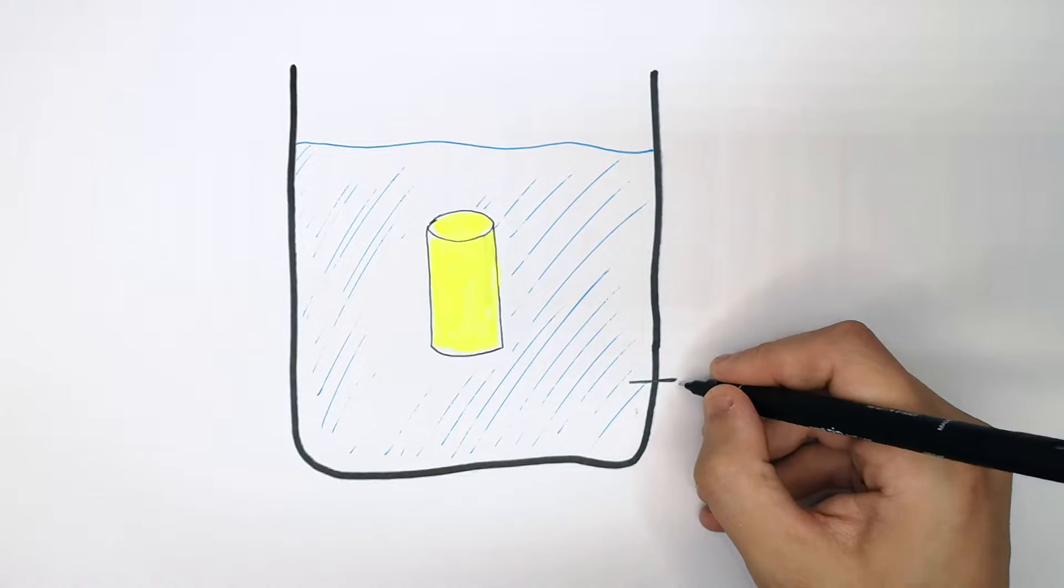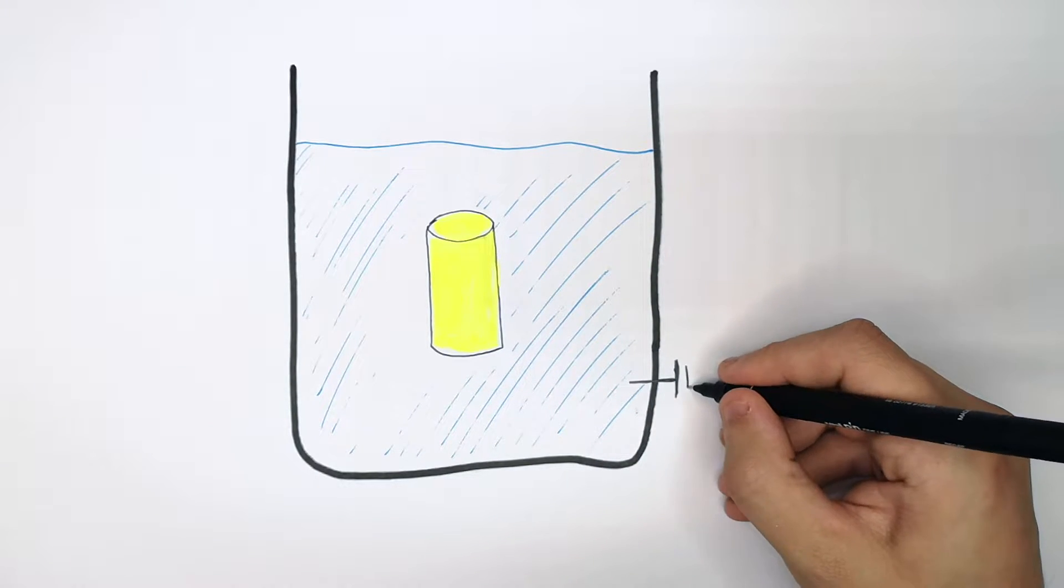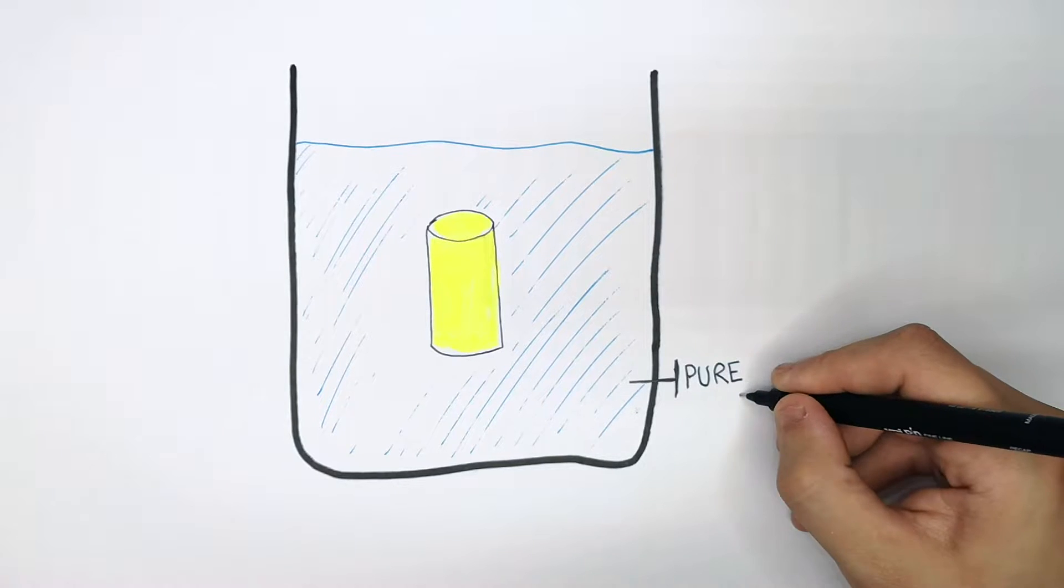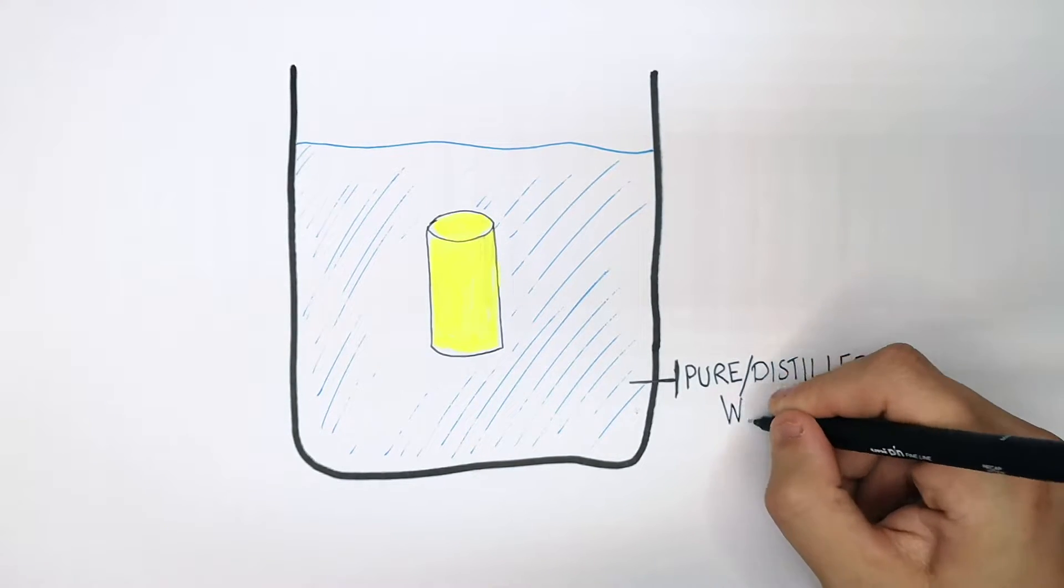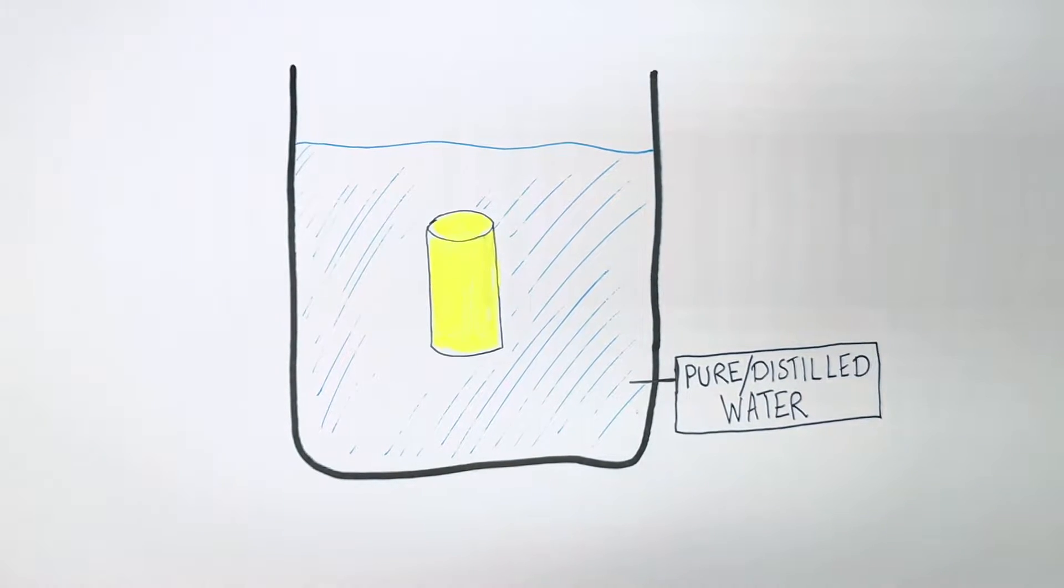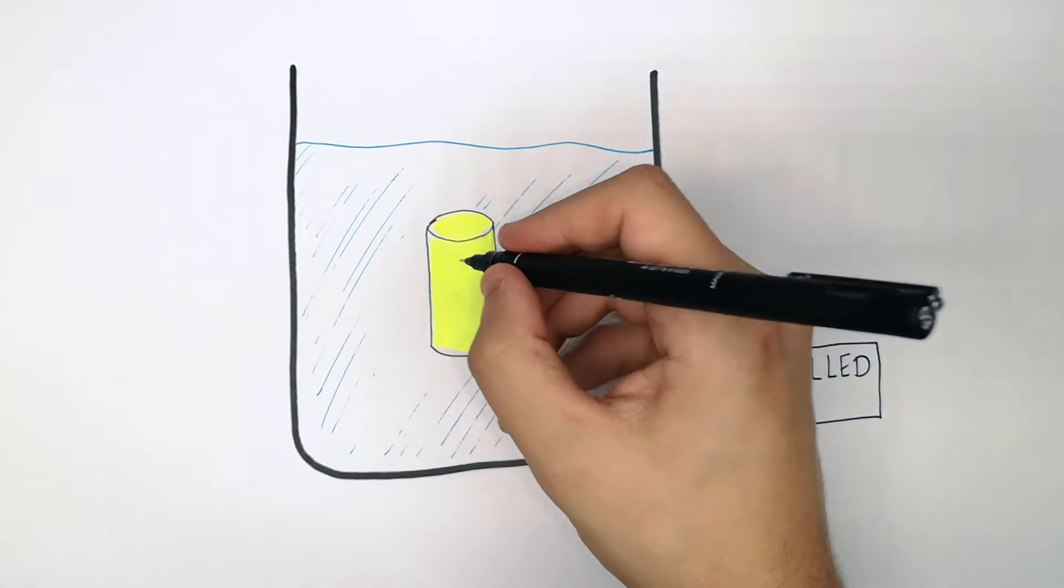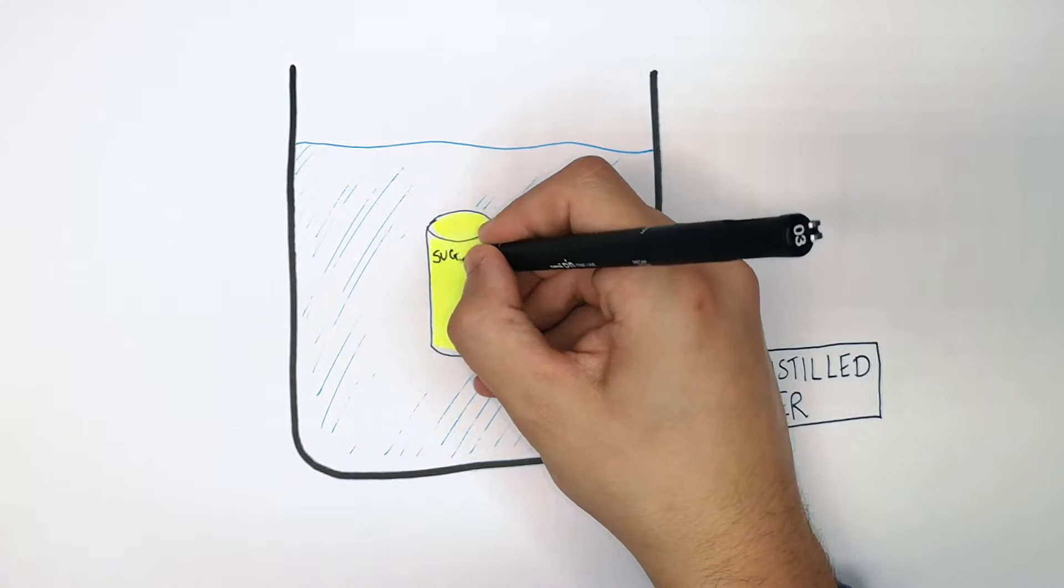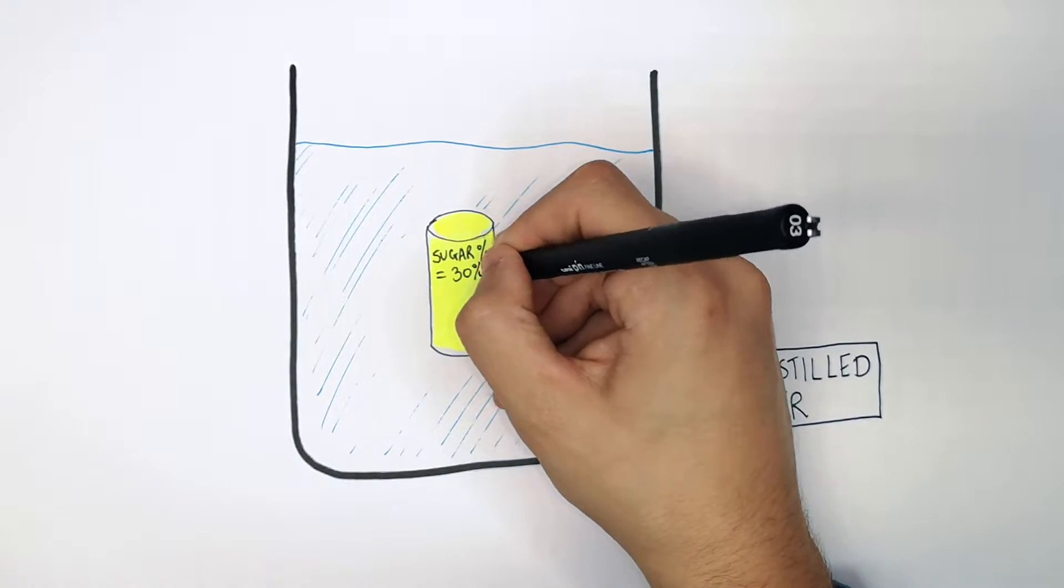So in this situation here, we've got potato that is sat in a beaker of pure water, aka distilled water. This means it's completely pure and there is no solute in it. So inside the potato, I'm going to give the solute concentration as 30% sugar.